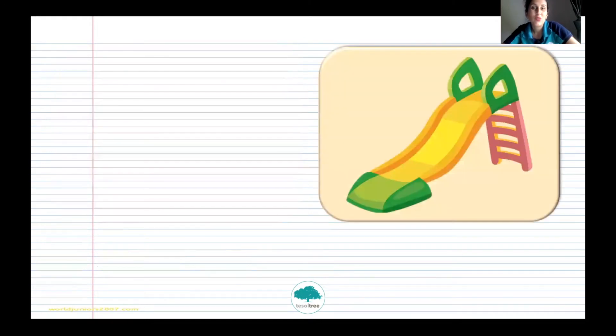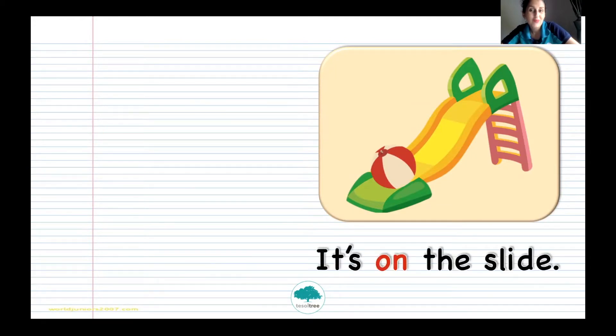And let's have a look at this picture. Now, where is the ball? Can you see it? It's on the slide. This is the slide and you can see the ball. Can you repeat this sentence? It's on the slide. Fine.